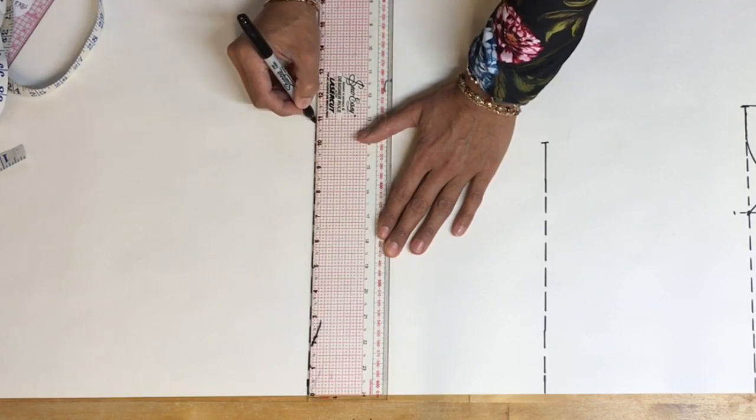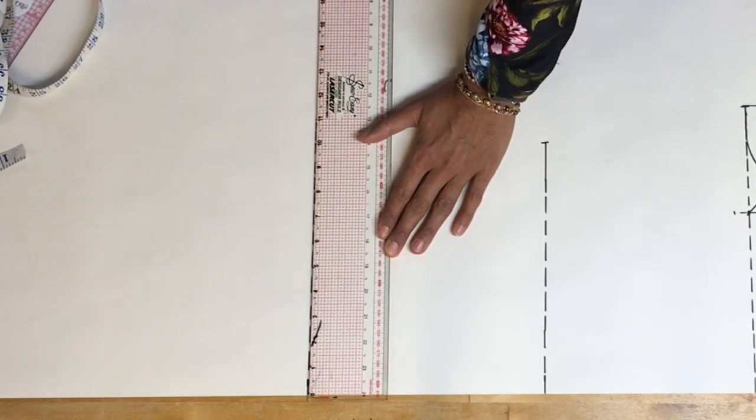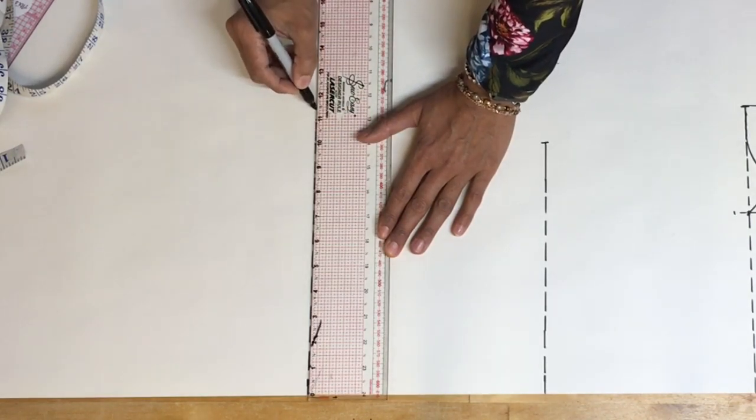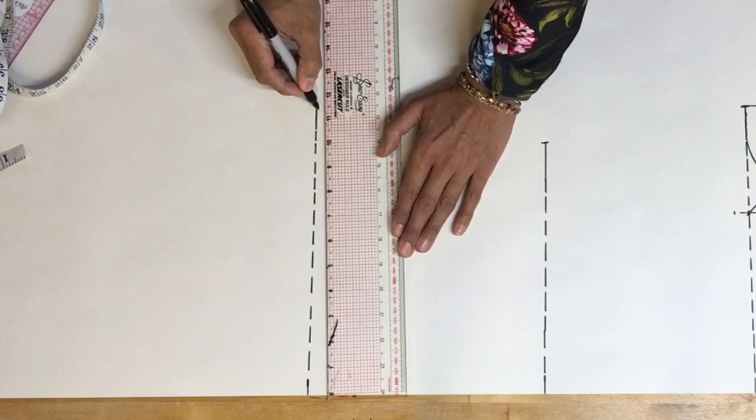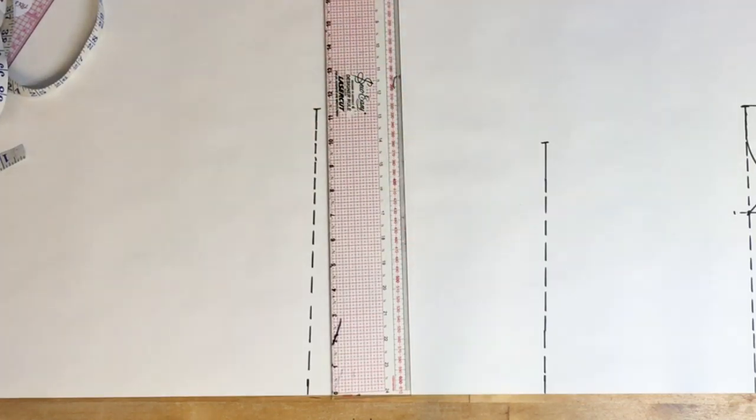So again, I'm going to bring it out to 10 because a quarter of 40 for my hips is 10. Add one inch for comfort, which gives me, again, four inches all the way around. And half an inch on each side, each piece to give me a seam allowance.